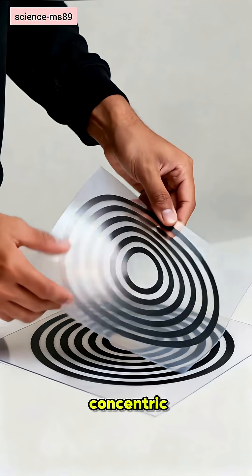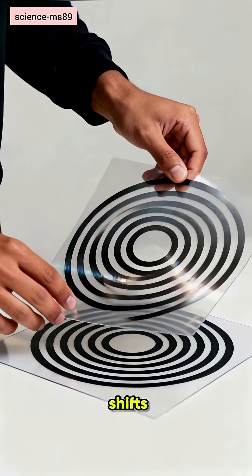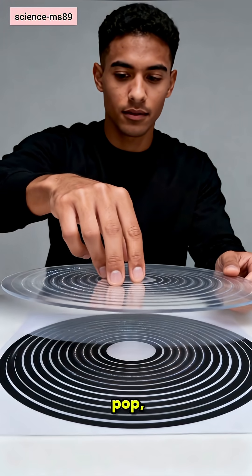Step three: use concentric circles. Small shifts make rings pulse, depth pop, and edges shimmer.